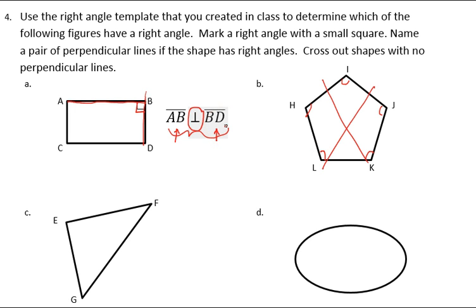In my triangle, I can see that this is a right angle in this corner, so this line segment and this line segment form perpendicular lines. So that would be line segment EF for this line segment, and line segment EG for the other line segment.